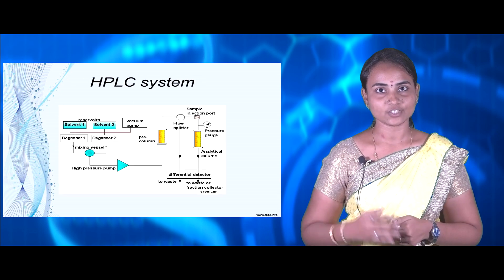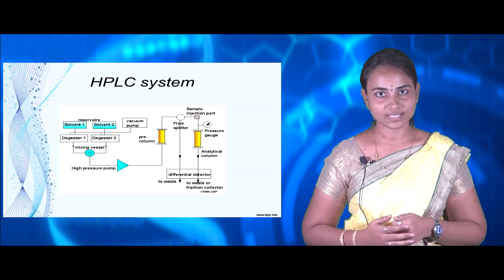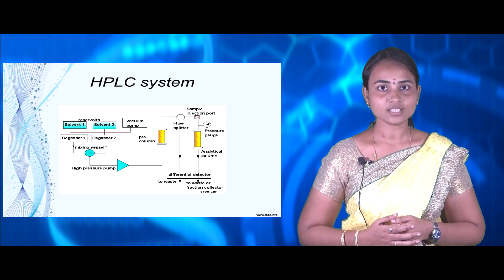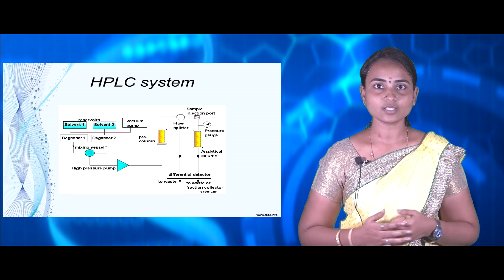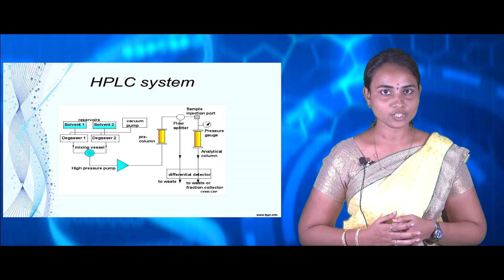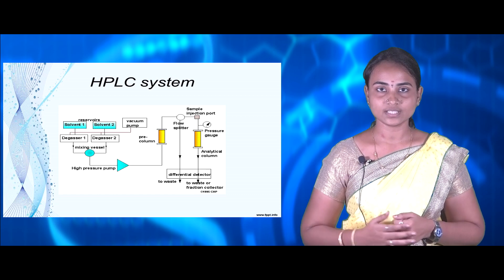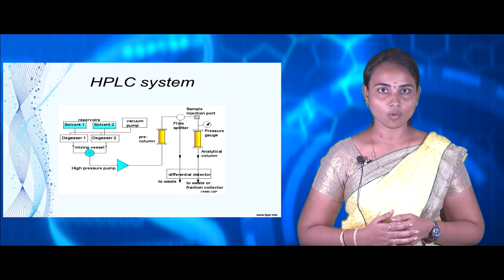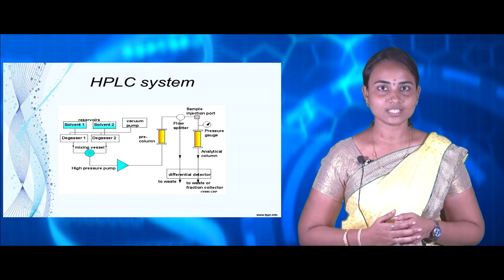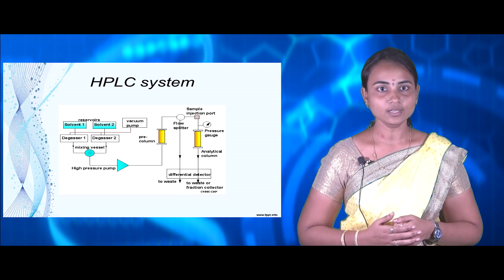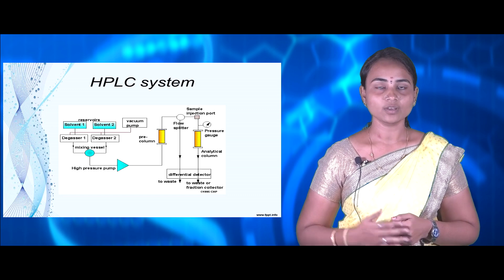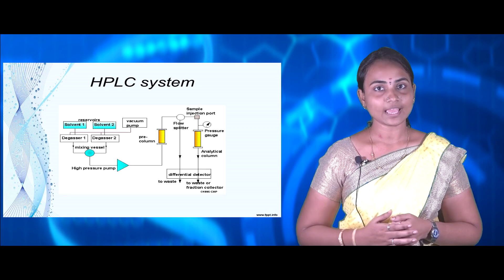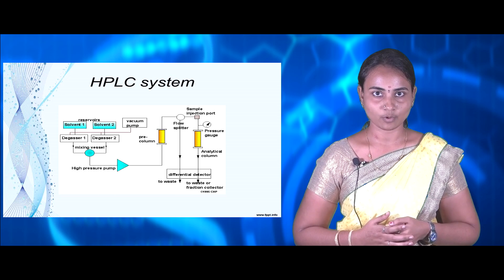This diagrammatic representation shows the HPLC system, which has two different reservoirs for solvent, allowing combinations of different solvents to be used. After the reservoirs, the flow is connected to a degasser to avoid air bubbles, then to a mixing vessel, and then to a high pressure pump to push solvents into the pre-column, which is connected to the sample injection port.